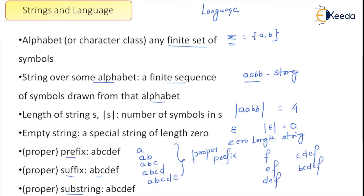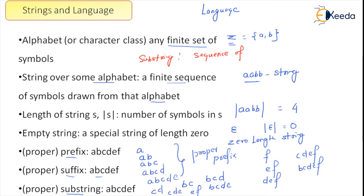A substring is a string that occurs somewhere within the string as a consecutive sequence of alphabets. For 'abcdef', examples of substrings include: 'bcd', 'bcde', 'cd', 'cde', 'ef'. You can start from anywhere, but the symbols must be consecutive. A substring is defined as a sequence of consecutive alphabets occurring within the string.